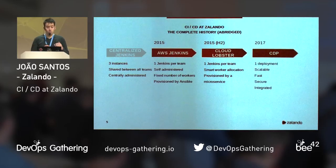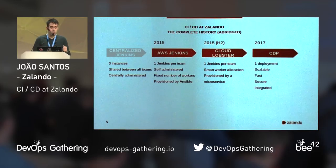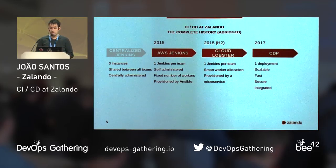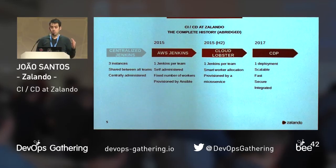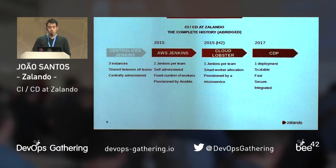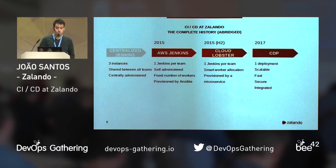So when we moved to Kubernetes, we took the chance to implement our own CI system that's faster, tightly integrated with Zalendo infrastructure, more cost-effective, simpler to use, and more secure. We call this system the Continuous Delivery Platform, or CDP for short.